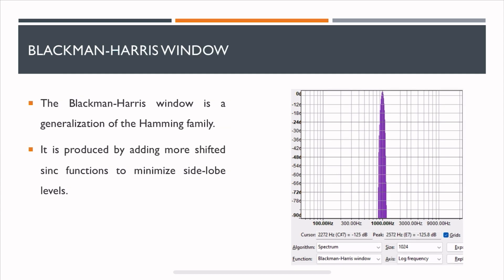The next is a Blackman-Harris window. It is a generalization of the Hamming family. It is produced by adding more shifted sinc functions to minimize the side lobe levels. As you can see here that it is very close to an ideal window. It has a wide main lobe, but side lobes have been reduced drastically.